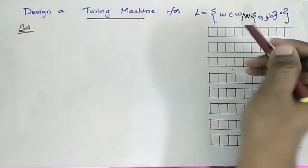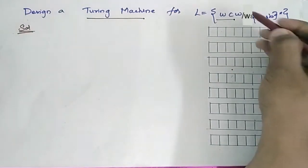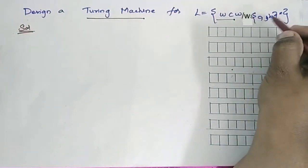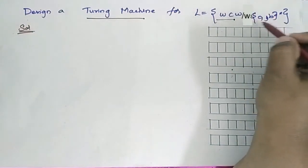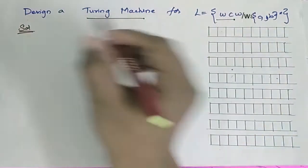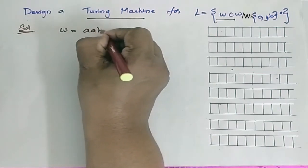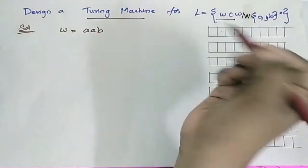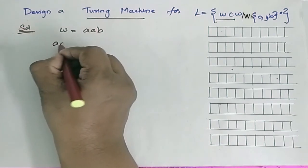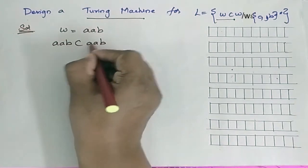Design a Turing machine for L = WCW, where W belongs to {A, B}*, which means W can be any string of A's and B's. Let us consider W to be AAB, so the string accepted by this machine will be AABCAAB.